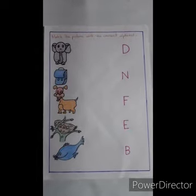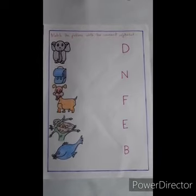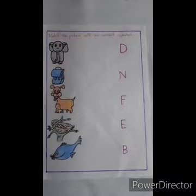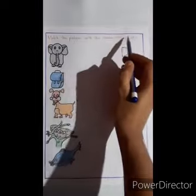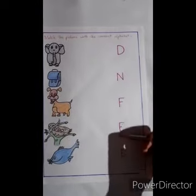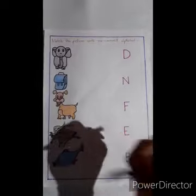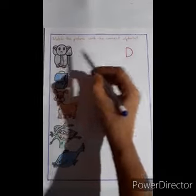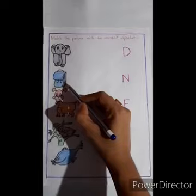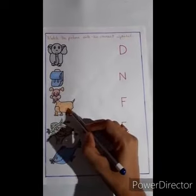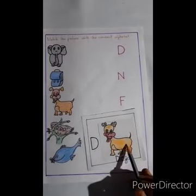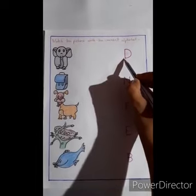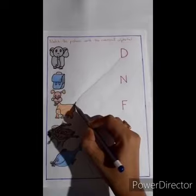In my previous classes, I have already shown you how to put a circle on the proper alphabet. So today we will learn about how to do matching. Match the picture with the correct alphabet. We have to match the alphabets with these words. So let's do it. D for elephant? No. D for bag? No. D for dog? Yes! It's D for dog. Now we have to draw a line from the alphabet D to the picture of dog.